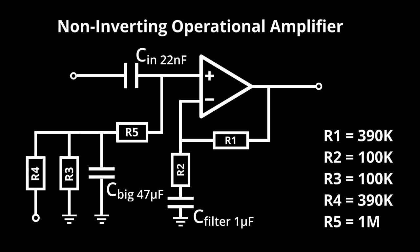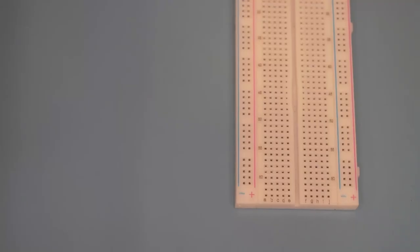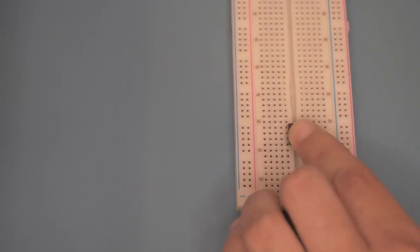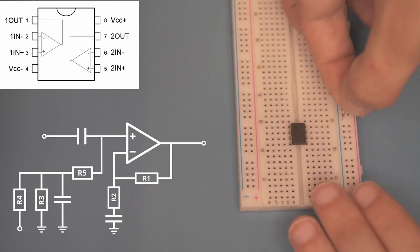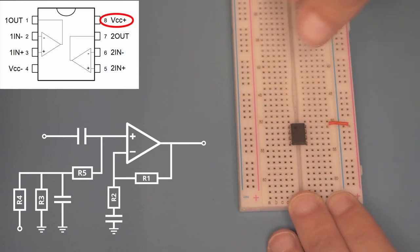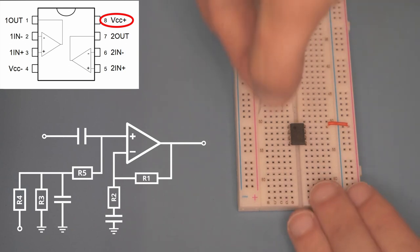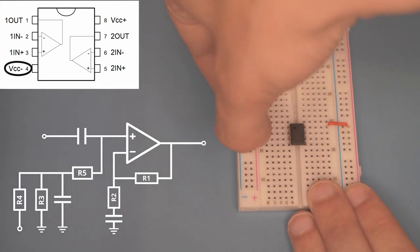With our bias and op amp circuit planned out, we can start setting it up on our breadboard to test it. Let's start by placing the op amp right in the center of our breadboard here. We'll attach VCC, the positive voltage reference. We'll also attach ground to the negative VCC pin.